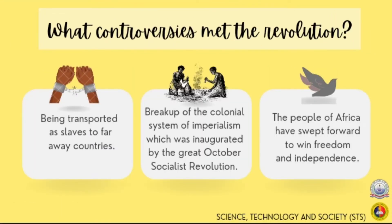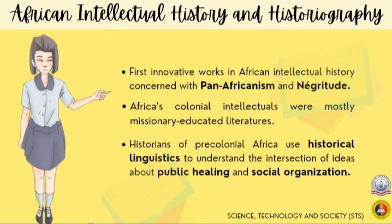These are the controversies that met the revolution. The African people, the sons and daughters of Africa, were transported as slaves and sent to faraway countries. The breakup of the colonial system of imperialism was inaugurated by the Great October Socialist Revolution. Lastly, the people of Africa swept forward to win freedom and independence. Pan-Africanism and Negritude represent the first innovative works in Africa's intellectual history.